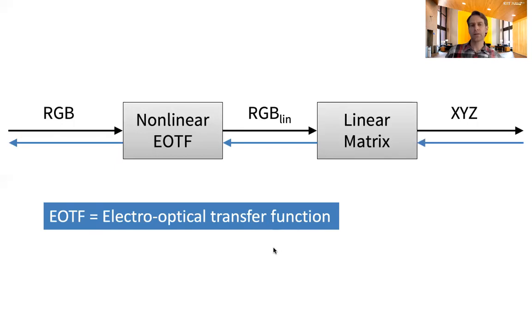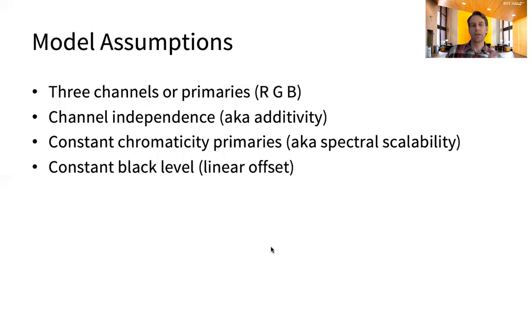Using this model requires some assumptions: three channels or primaries, for example red, green, and blue; channel independence, also known as additivity, which means that the output of one channel is unaffected by the output of another—they don't interact.